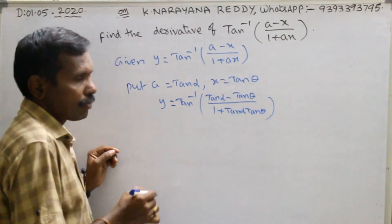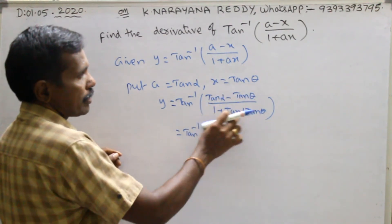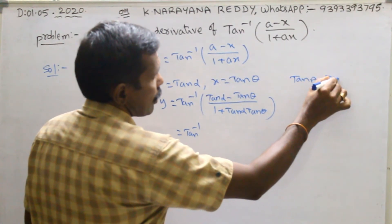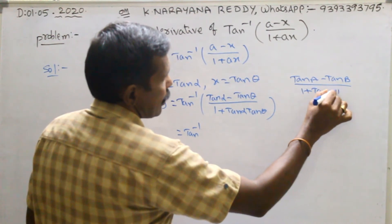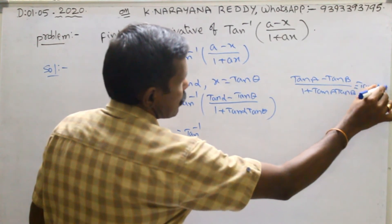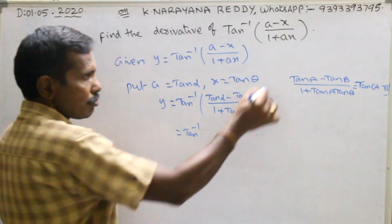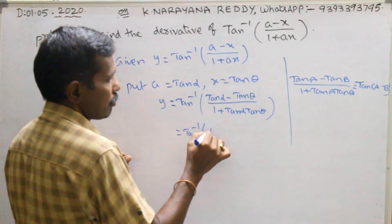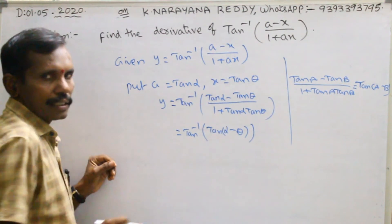It is nothing but tan inverse of tan a minus tan b by 1 plus tan a tan b. That is equal to tan of a minus b — that is the formula. According to that formula, we get tan inverse of tan of alpha minus theta, which equals alpha minus theta.